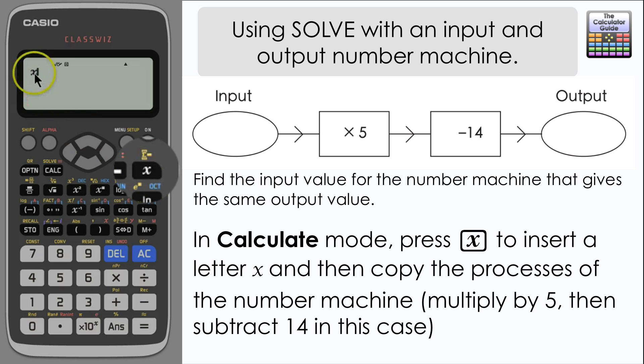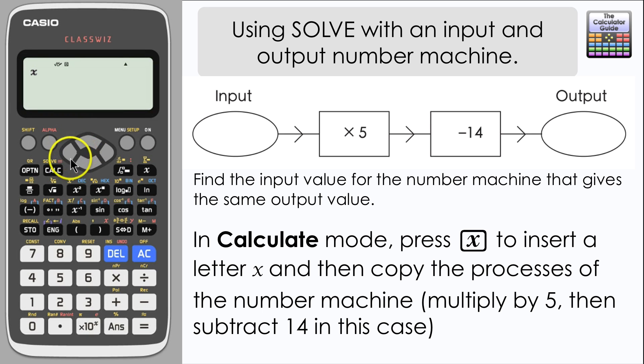Press X to display X and then you need to type out the processes of the number machine on your calculator. So in this case it's multiplied by 5 and then subtract 14.